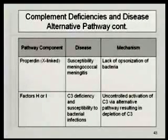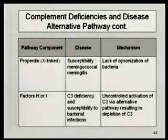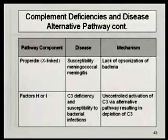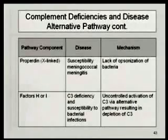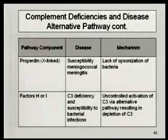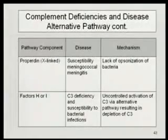There are also defects in factors H and I. These lead essentially to a C3 deficiency. Factors H and I are involved in degrading C3b. If you can't do that, you have spontaneous hydrolysis of C3 ongoing, and the amplification loop just keeps going — you can never inactivate it. You end up depleting yourself of C3, so this mimics a C3 deficiency. Any questions on that, and then I'll go on to the topic for today.